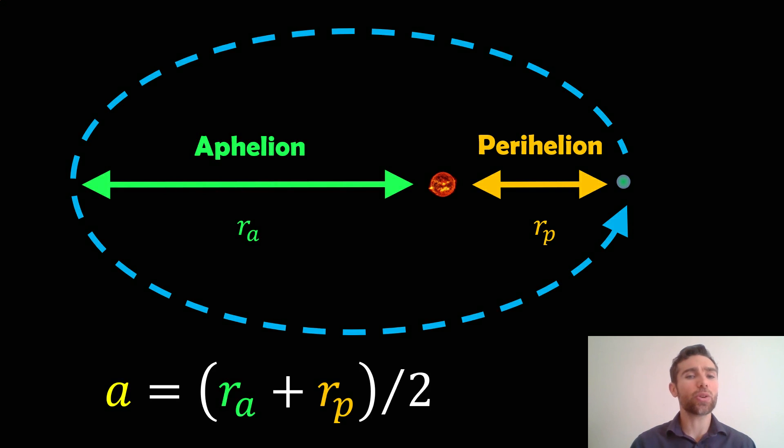However, if you don't know the orbital period, and you don't know the mass of the central object, you can still get the semi-major axis using the shortest and longest distance between the two objects during the orbit.